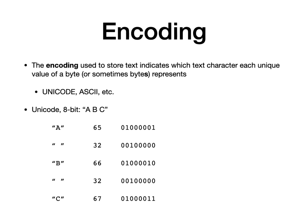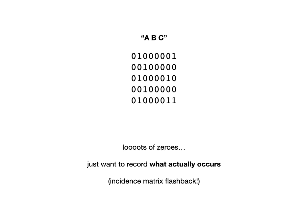Looking at the string A B C with spaces, that's 8 times 5 — 40 bits to represent just three letters and two spaces. If you look at it, there's a lot of zeros. Kind of like the incidence matrix — there's a lot of things that aren't informational here. The answer is not just get rid of the zeros — that would destroy the patterns of these bytes that represent the values. But there is a way to condense the informational content here into something more tightly packed.